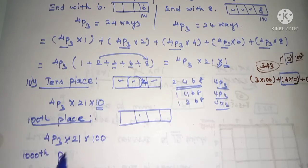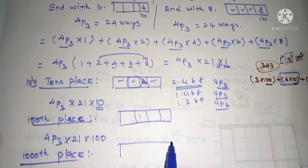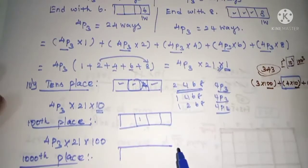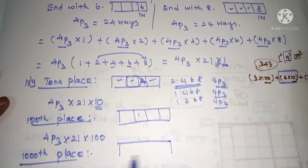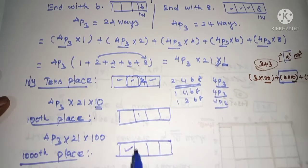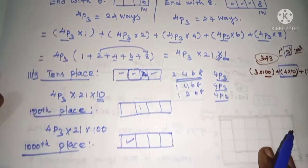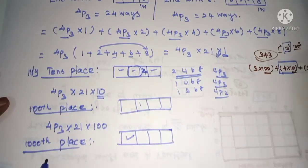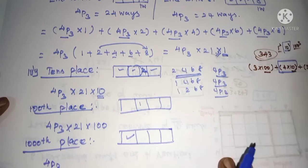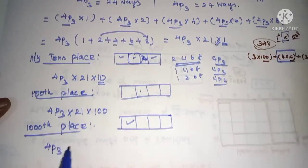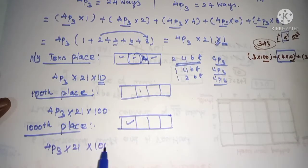So for the 1000th place, the same digit values repeat and the arrangements are 4P3. So the contribution from the 1000th place is 4P3 into 21 into 1000.